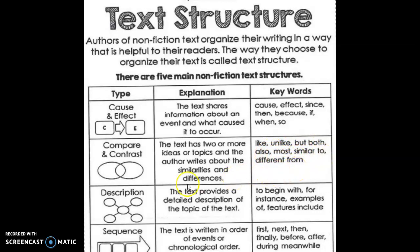The third type of writing is description. It can be describing a person, place, or object, and there are describing graphic organizers available, or one can make one's own. This kind of writing provides a detailed description of the topic. The words used in it are: to begin with, for instance, for example, an example of, and features include.